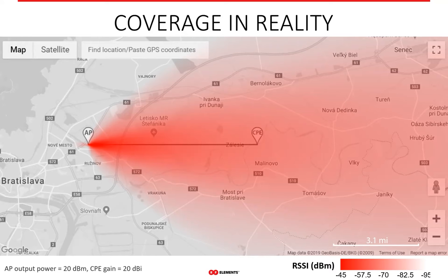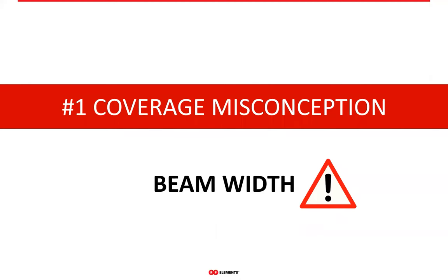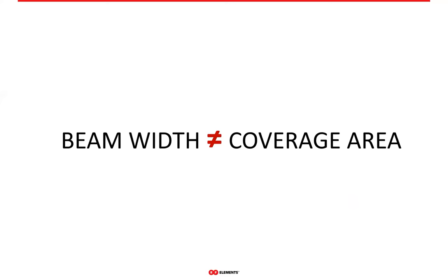There are other things coming into the calculation, which we mention in the lower left corner. Before we go into the details of coverage, it's useful to look at a few misconceptions about what wireless network operators may think coverage is. Many users understand that the coverage of an area is defined by the beam width of the antenna they use, and this is simply not true. There is a vague connection between them, yes, but they are not the same thing — actually not even close.